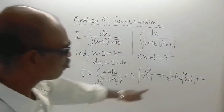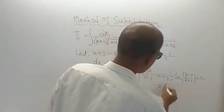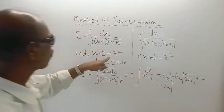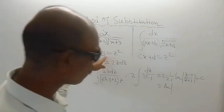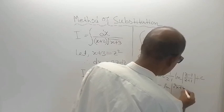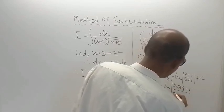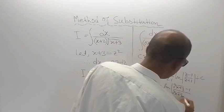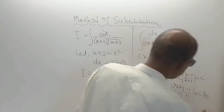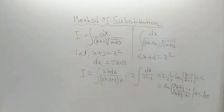So these two and these two are cancelled. So remaining thing is ln (z minus 1) by (z plus 1). z is how much? From here we are getting z is equal to root of (x plus 3). So root of (x plus 3) minus 1 divided by root of (x plus 3) plus 1 plus c. So this is the answer to the given problem. Yeah, entire board is visible, there is no problem at all.